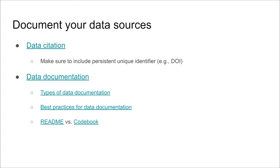Whether you obtain the data from another source or create the data yourself, you must also fully document the data, both the raw data and any processed versions of the data. There are different styles of documentation for data, but it is important that the basic properties of the data and all of the fields in the dataset are fully documented. Proper interpretation of a visualization is based on understanding exactly how the data used in the visualization were created.